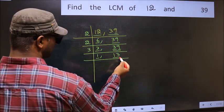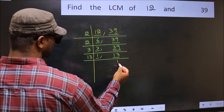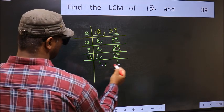Now we got 1 here. So focus on the next number 13. 13 is a prime number. So 13 goes into 13 once. So we got 1 in both places.